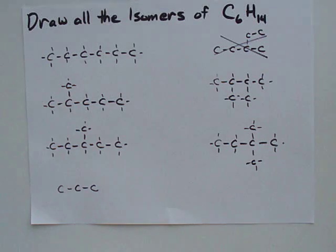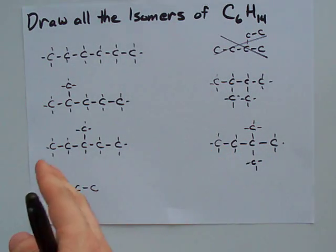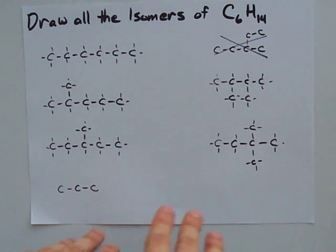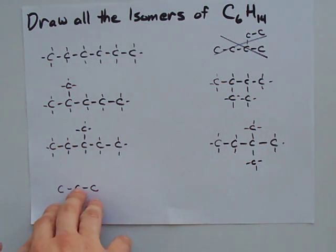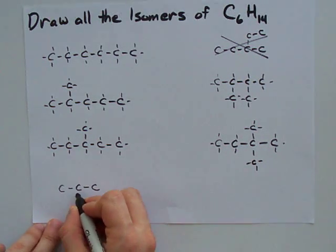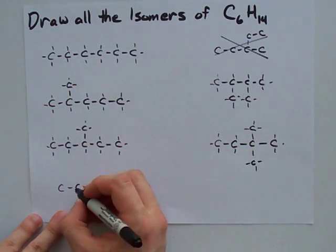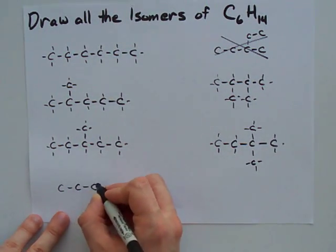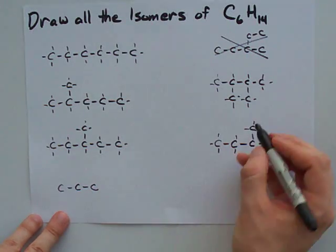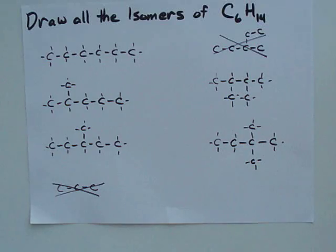Let's see what we can do with a 3 carbon chain. What could I do to add 3 carbons to this that's going to allow me to say that that molecule is different from all the others? I can't just attach them here as a chain of 3, because then I have a chain of 5, and I already took care of all the 5s. I can't put 1 here, 1 here, and 1 here, because then I have a chain of 4, and I already took care of those. I don't think I can do anything with that. I think these are the only isomers of C6H14.